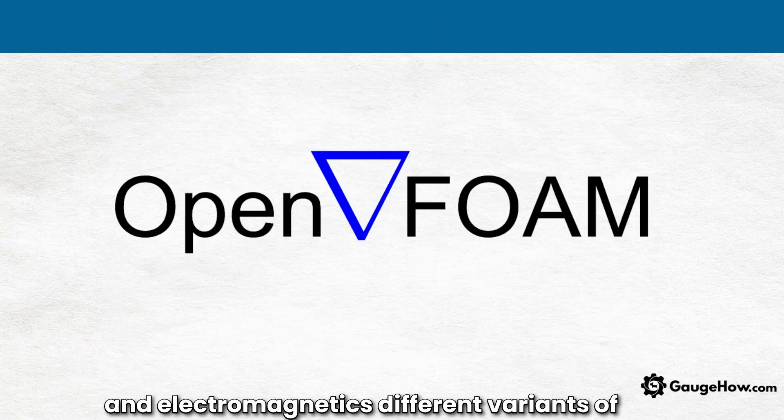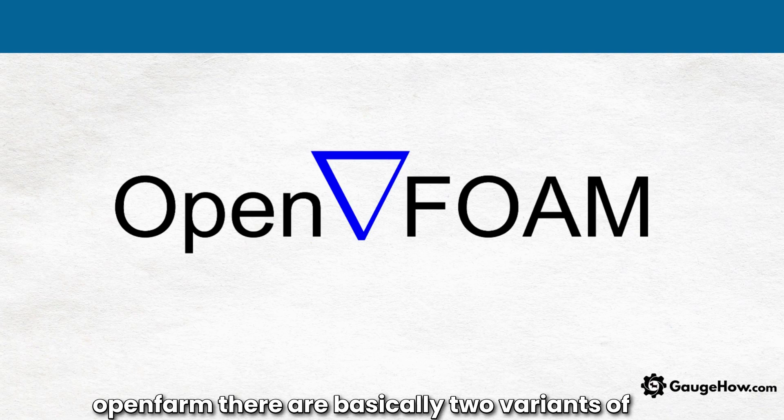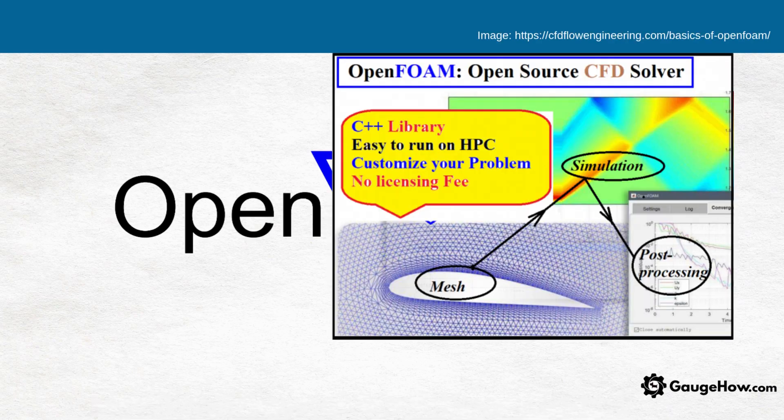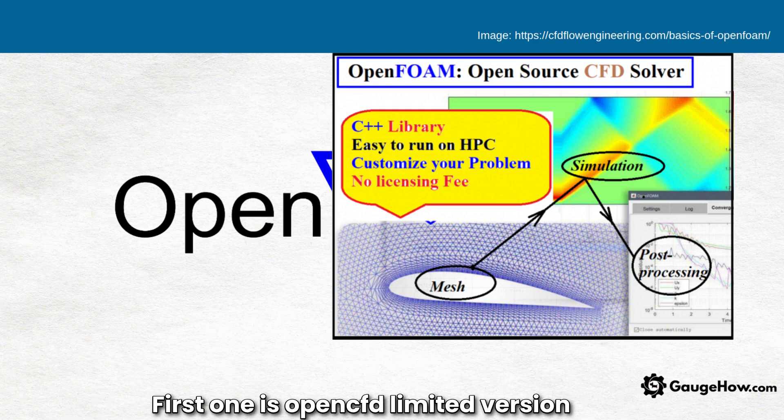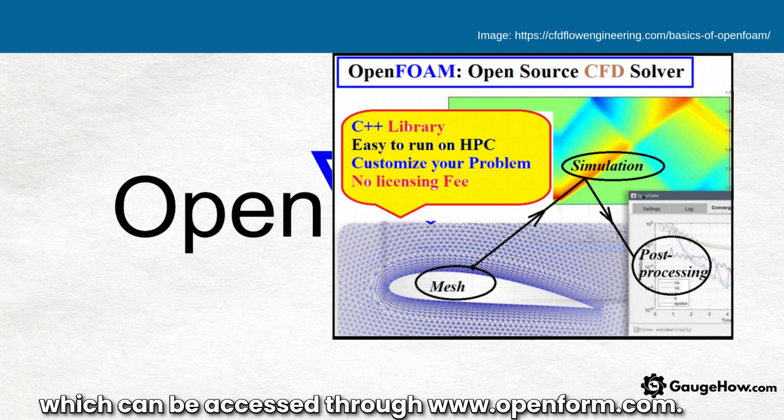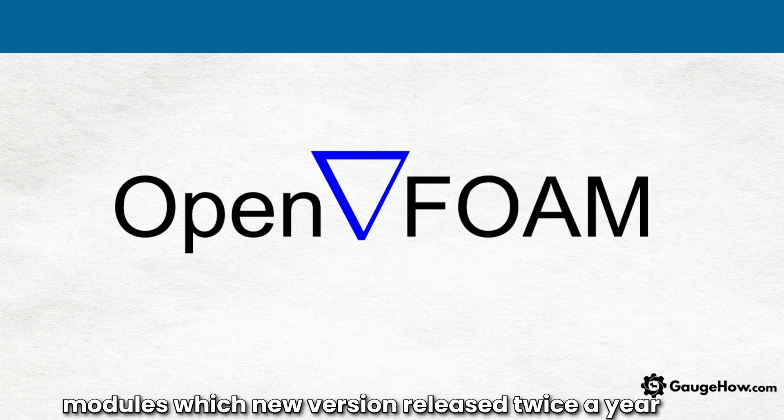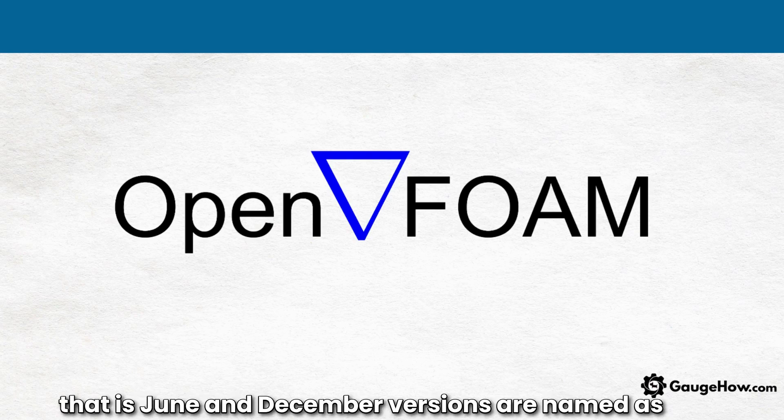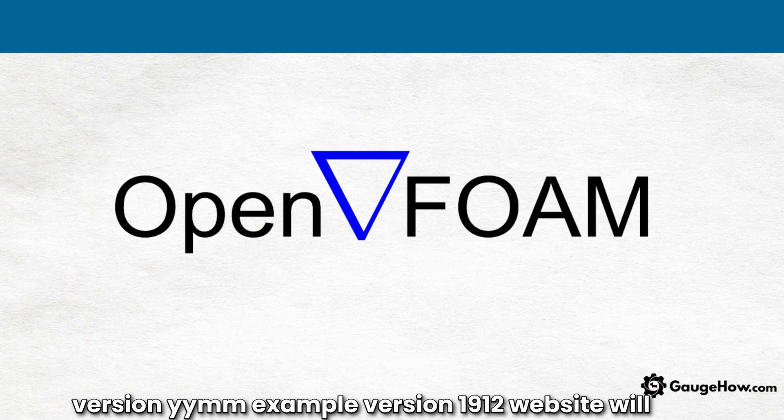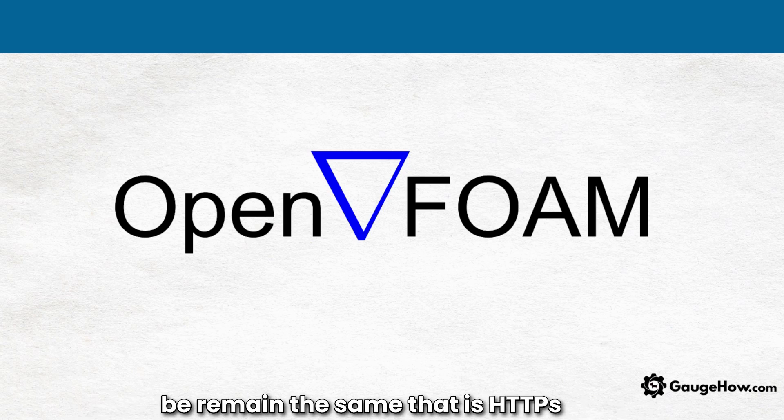There are basically two variants of OpenFOAM. First is the OpenCFD Ltd version which can be accessed through www.openfoam.com. New versions are released twice a year in June and December. Versions are named as YYMM, for example version 1912.